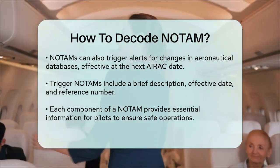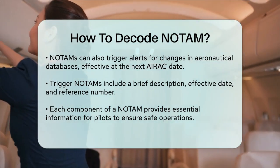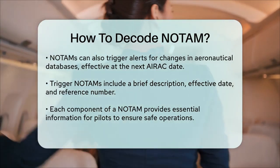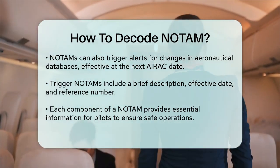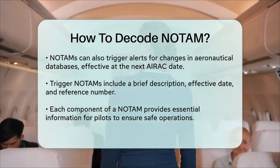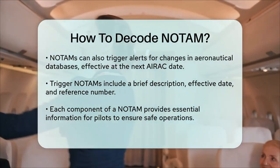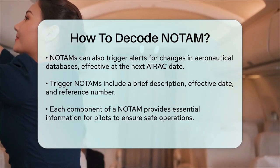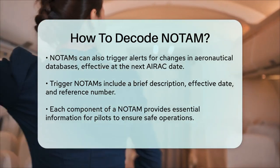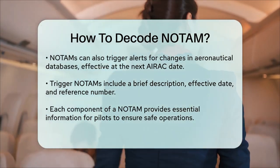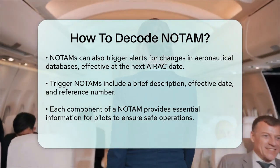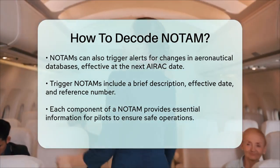In summary, decoding a NOTAM involves understanding the series and sequence number, the type of operation, the five-letter code group, and the affected location. By breaking down each part, you can quickly and accurately interpret the information provided in a NOTAM.